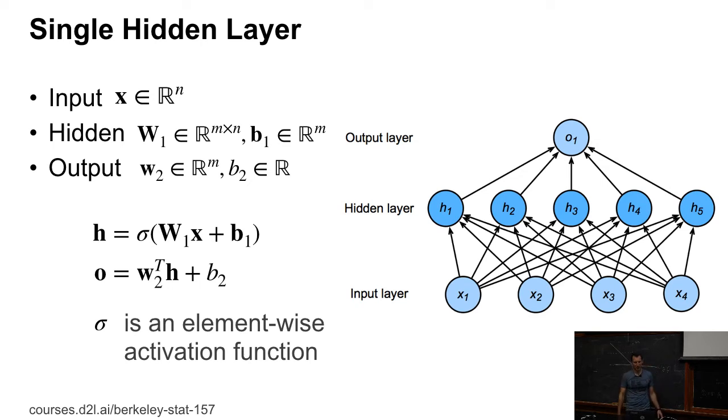So, here's the math. We have some input X. For the hidden layer, we have some parameters W1 and bias B1. For the output, we have some vector W2 and bias B2. So, for the hidden layer, I have some nonlinearity of W1 times X plus B1. And then, for the output, I have W2 transpose H plus B2. And the sigma is an activation function.